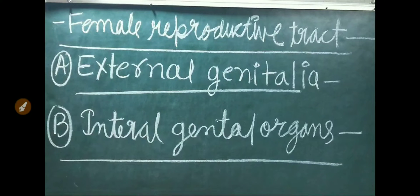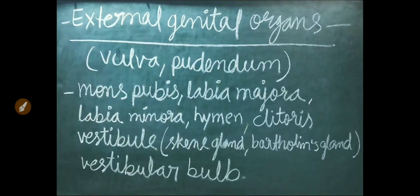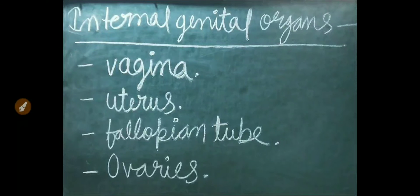The female reproductive tract can be divided into two parts: external genitalia and internal genitalia. Female external genitalia organs are known as vulva or pudendum, and include mons pubis, labia majora, labia minora, hymen, clitoris, vestibule, Skene's glands, Bartholin glands, and vestibular bulb. Internal genital organs include vagina, uterus, fallopian tubes, and ovaries.